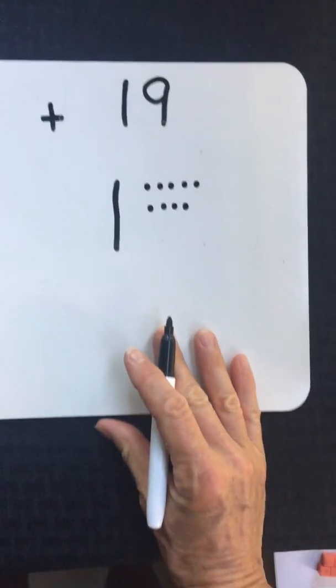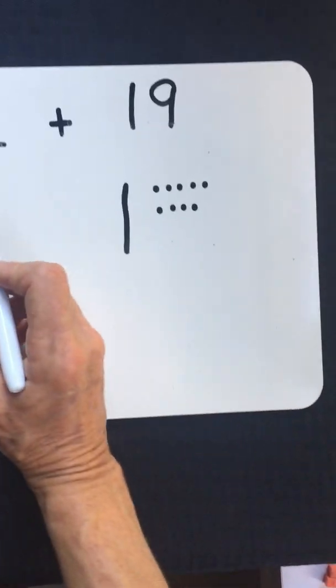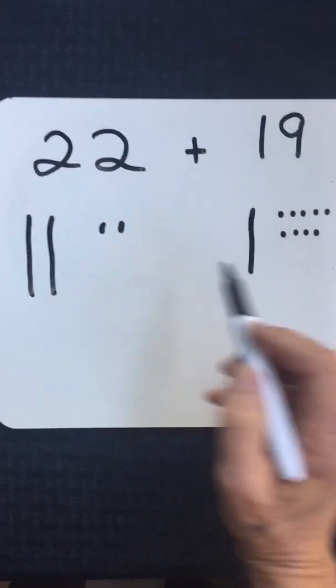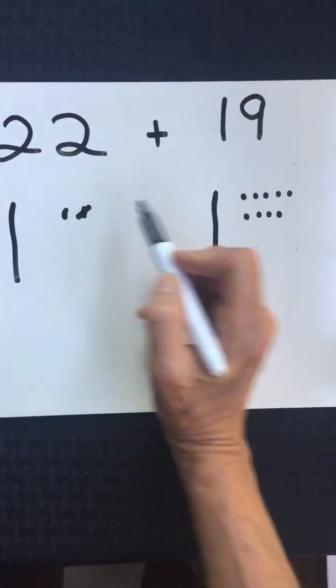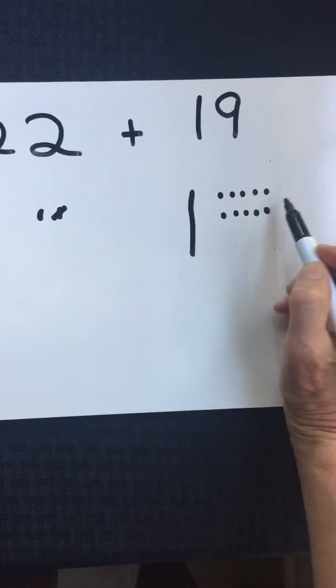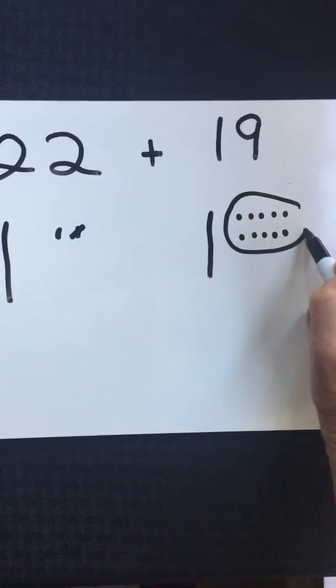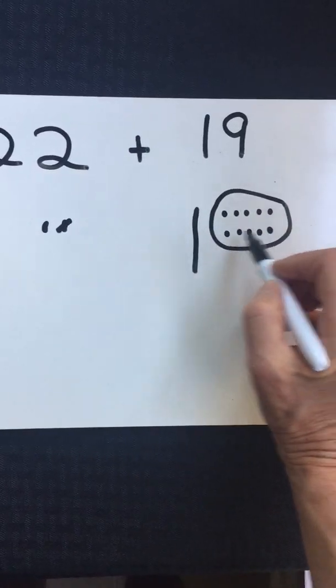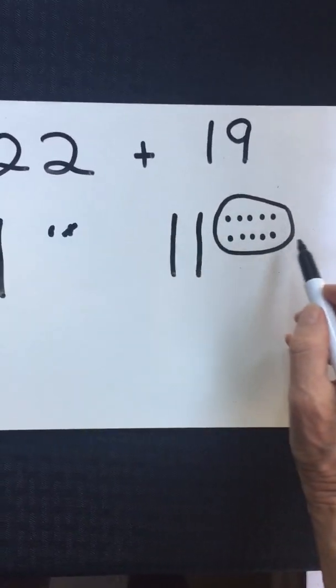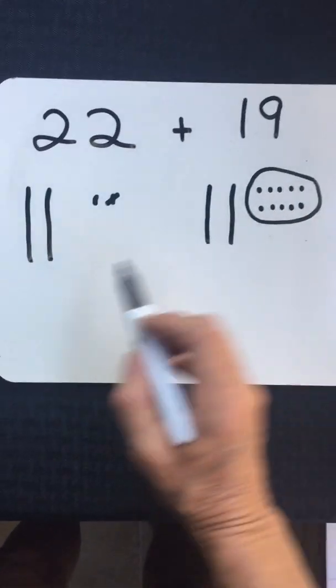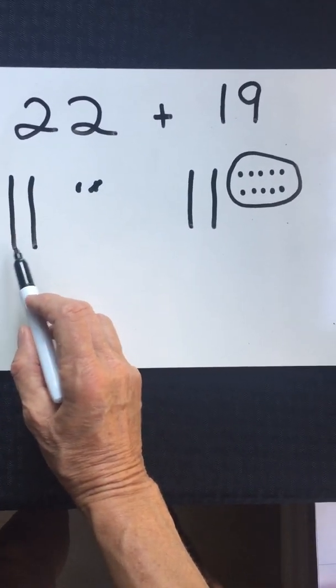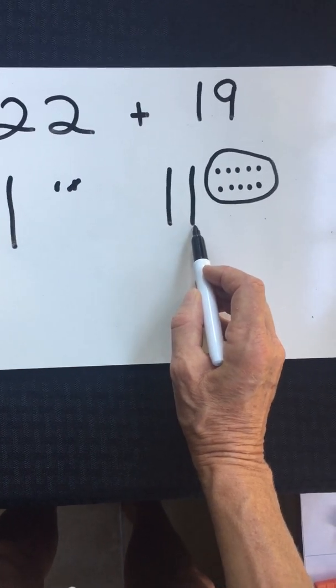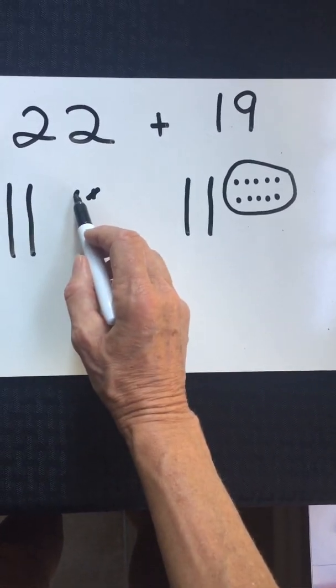I almost have a 10. If I take one of the ones from 22 when I add all of this together and I join this one over here, I can make another 10 and trade those 10 ones for one 10 bar. Now I have 10, 20, 30, 40, and one more left over.